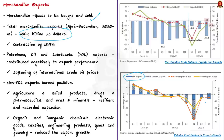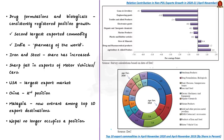On the other hand, non-POL exports turned positive and helped improve export performance. Among non-POL exports, agriculture and allied products, drugs and pharmaceuticals, and ores and minerals proved resilient and recorded expansion. However, key commodities such as organic and inorganic chemicals, electronic goods, textiles and allied products, and engineering products pulled export growth down. Based on available data, drug formulations and biologicals have consistently registered positive growth, making them the second largest exported commodity among the top 10 export commodities of our country.